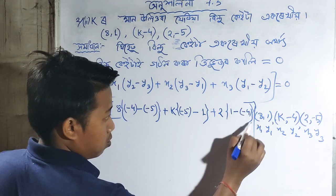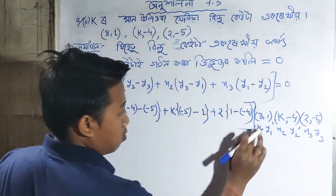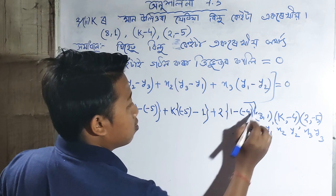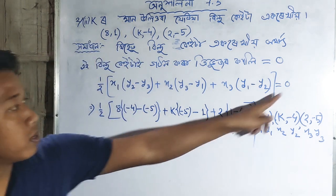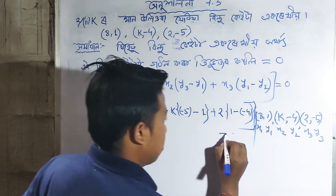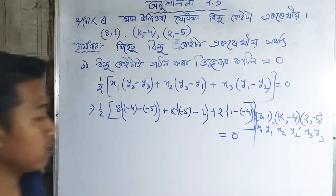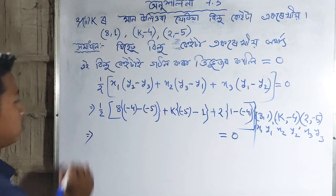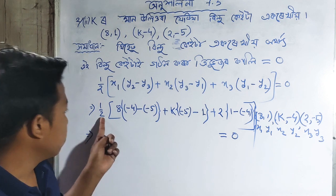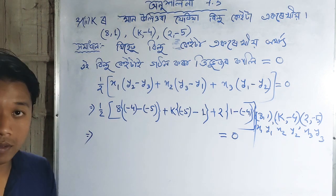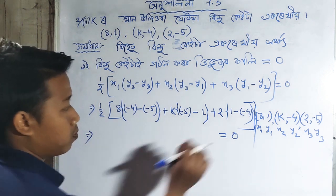This entire expression equals zero. We have the equation set up completely now. Let me simplify each part to solve for K.